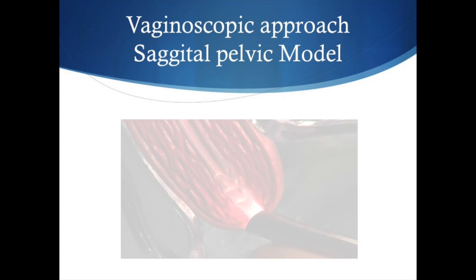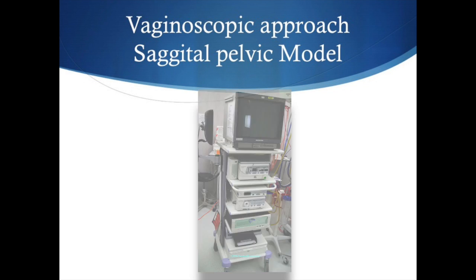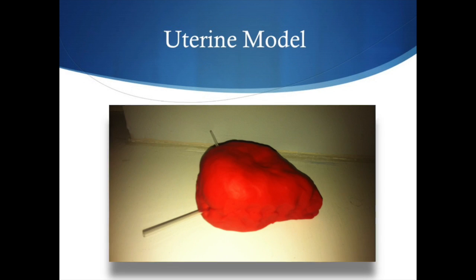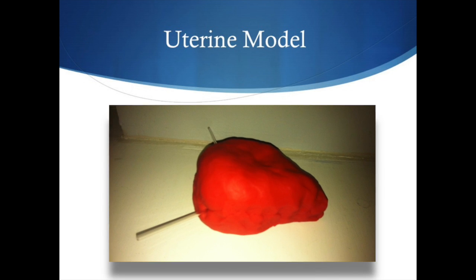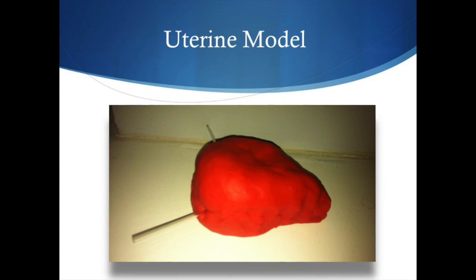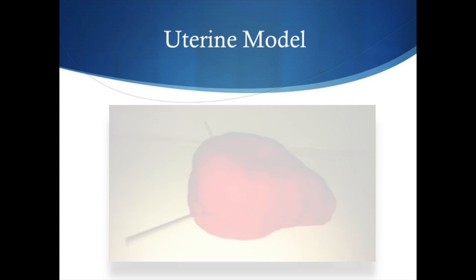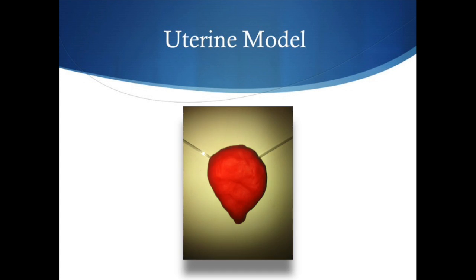And while watching the visualisation system, the hysteroscope can be advanced slowly into the uterine cavity. Here we have produced a cheap reproducible uterine model using children's modelling clay and straws to mimic the tubal ostia.